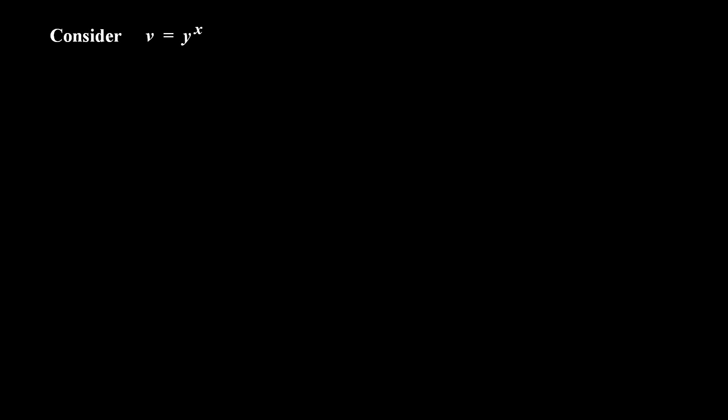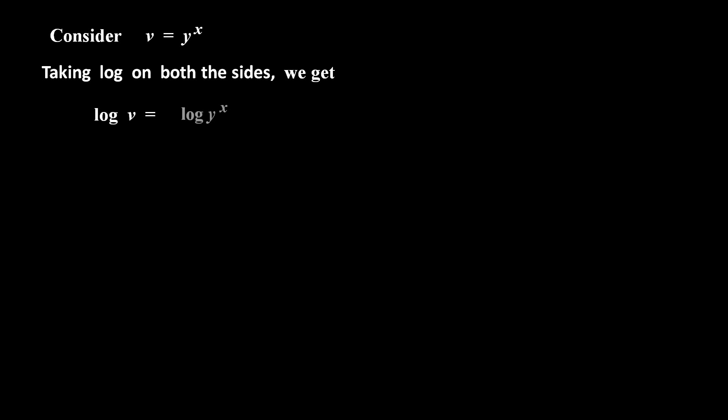Now consider the second part: v is equal to y raised to x. Taking log on both sides, we get log of v equal to log of y raised to x. By using the law of exponent of logarithm, this becomes x into log y.